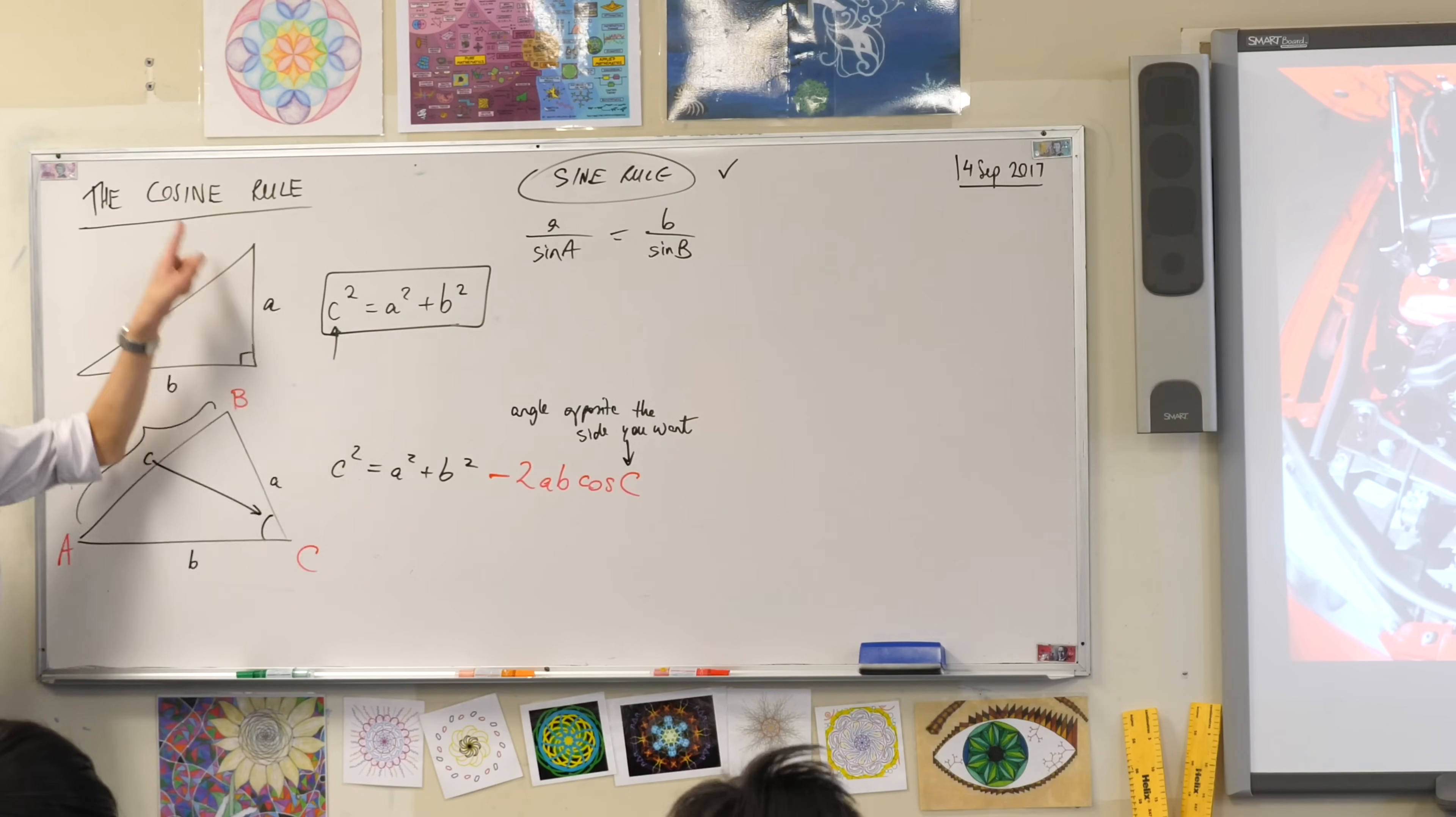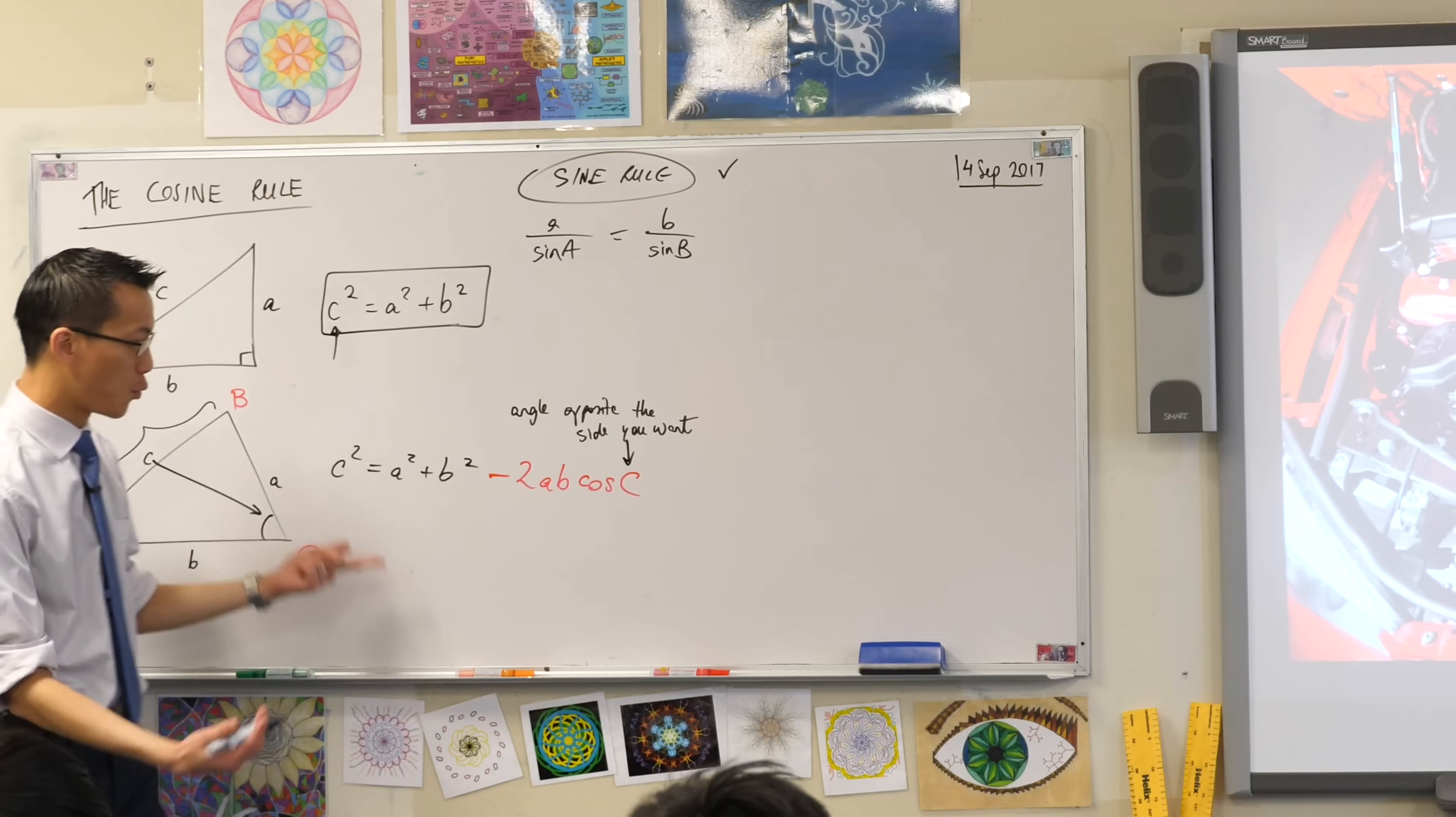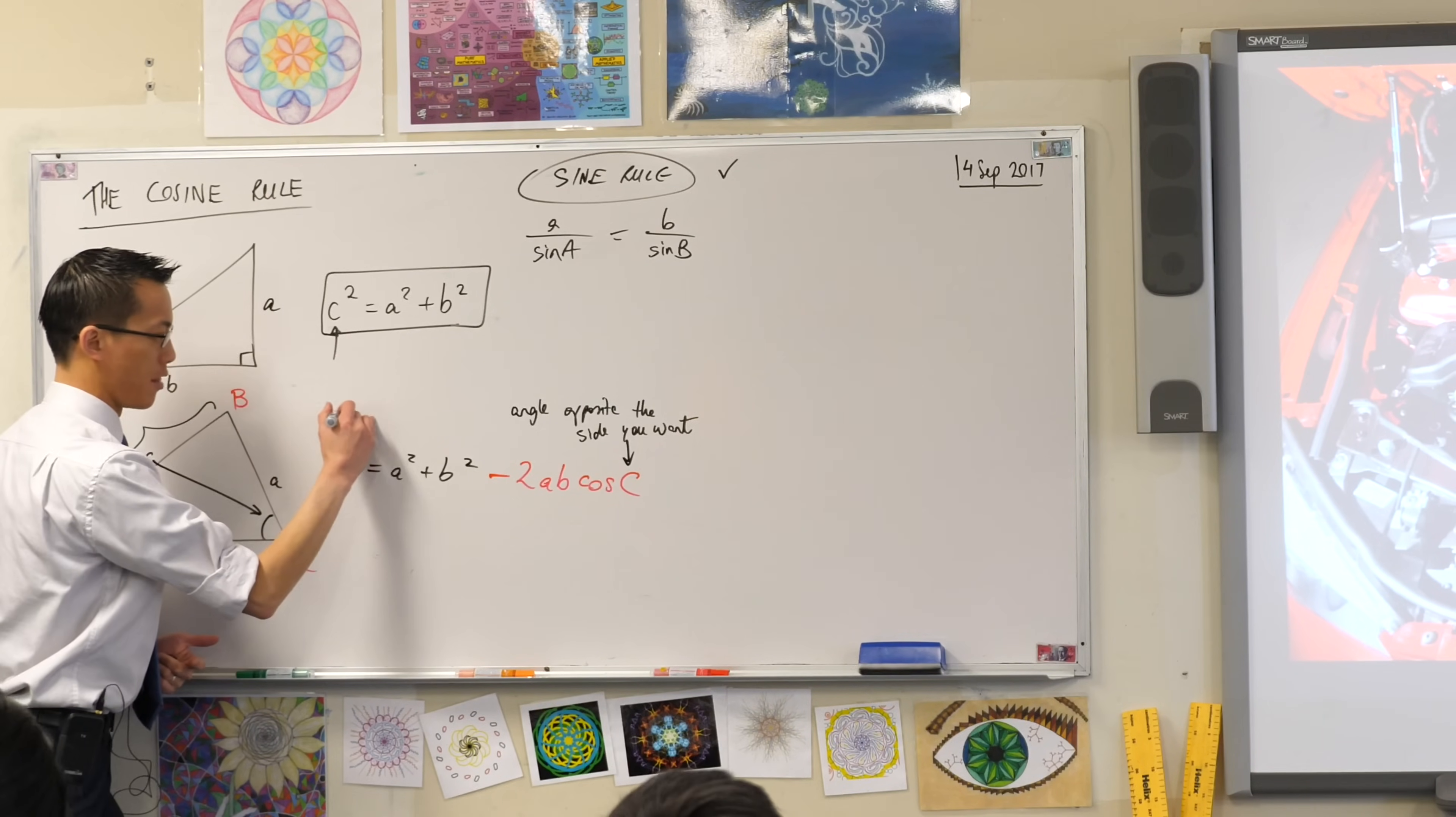This is the cosine rule. Because, see, it's got a cosine in it. So, if you want, you can label this. This is the cosine rule.